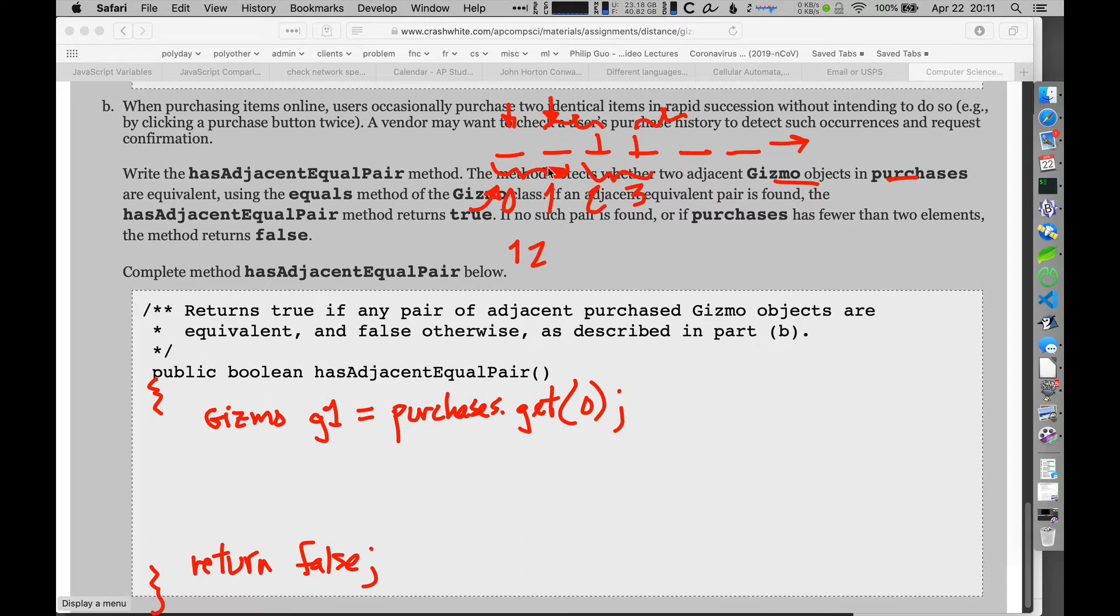So gizmo g1 is going to be that first element in there. What's the name of this? So this is purchases, and it's an array list, so I'm going to use get. So I'll say purchases dot get that first element in the array, index of zero.